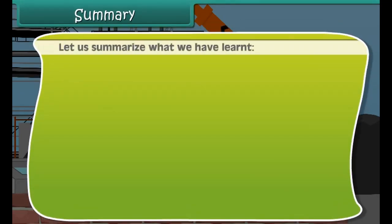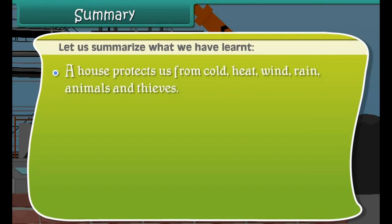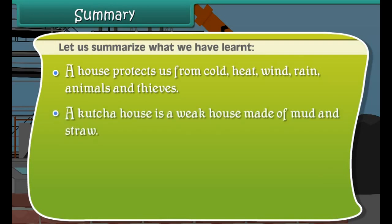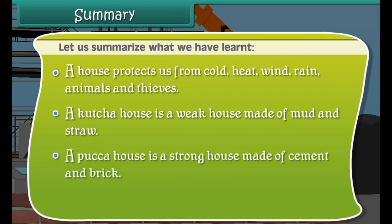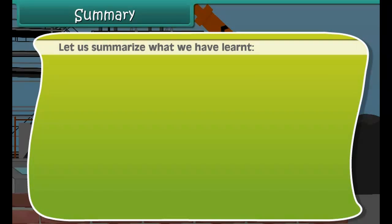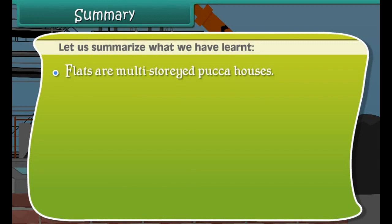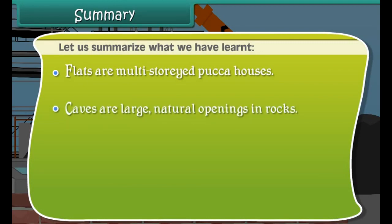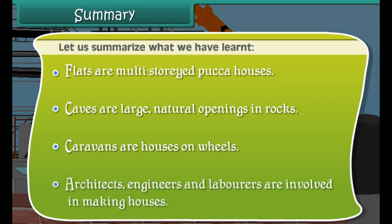A house protects us from cold, heat, wind, rain, animals, and thieves. A kacha house is a weak house made of mud and straw. A pakka house is a strong house made of cement and brick. Bungalows are single-storey pakka houses; flats are multi-storey pakka houses. Caves are large natural openings in rocks. Caravans are houses on wheels. Architects, engineers, and laborers are involved in making houses.